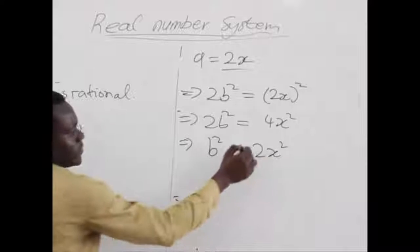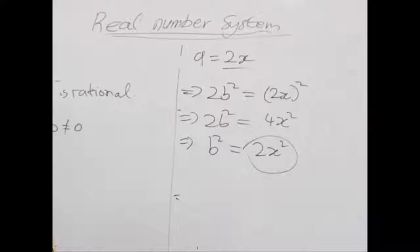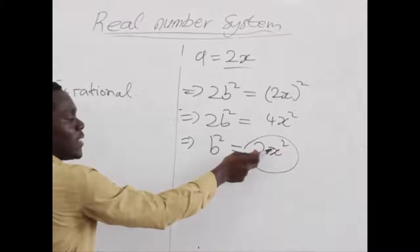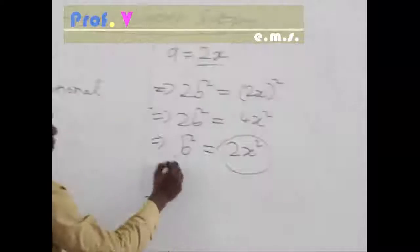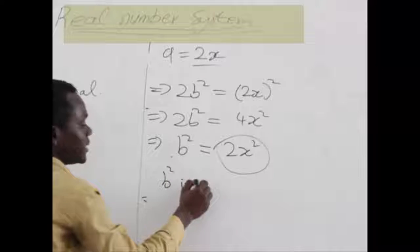And we can find out that 2x squared is even because of this 2. Once multiplied by anything, it is even. So it implies that b squared is even.